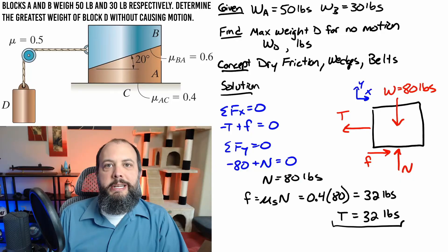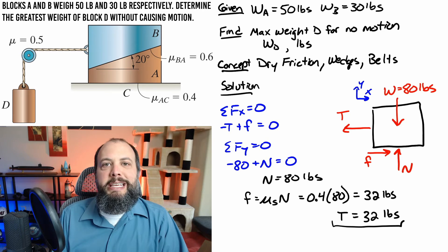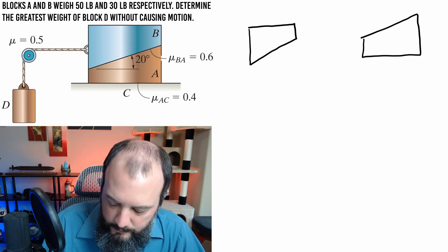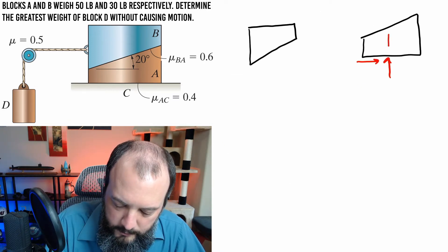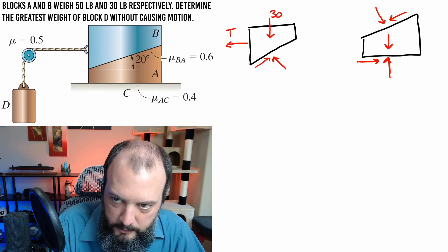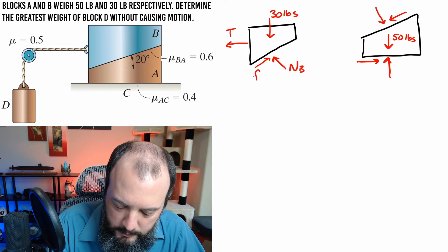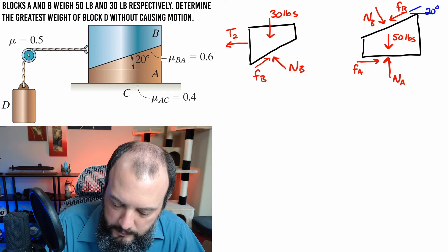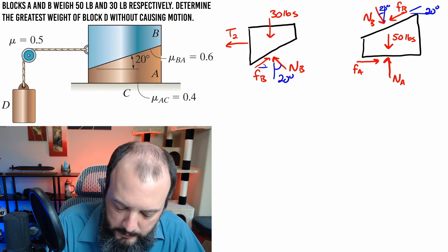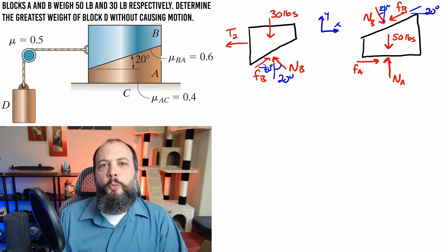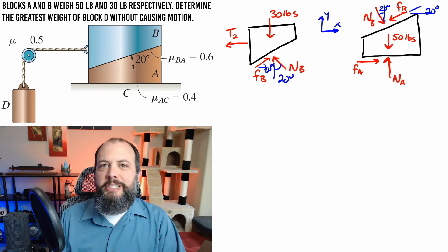Alright so halfway done now let's take a look at the other type of motion, block B sliding off of block A with block A being stationary still stuck to the ground.